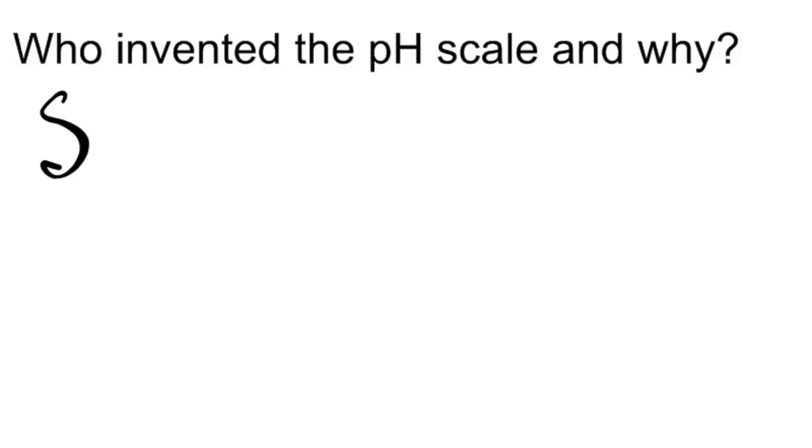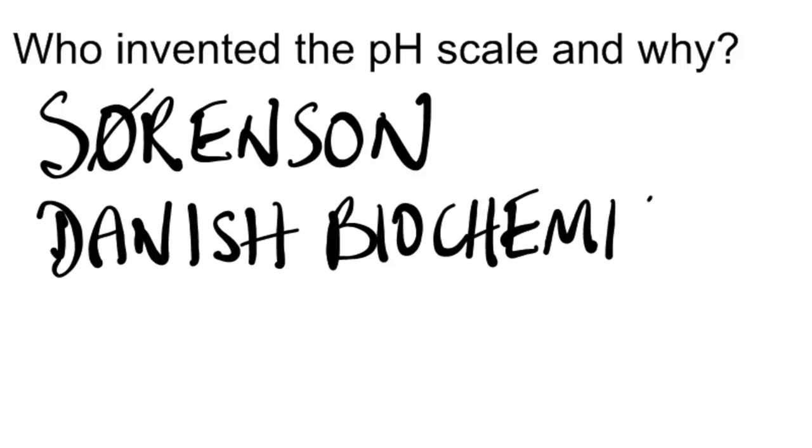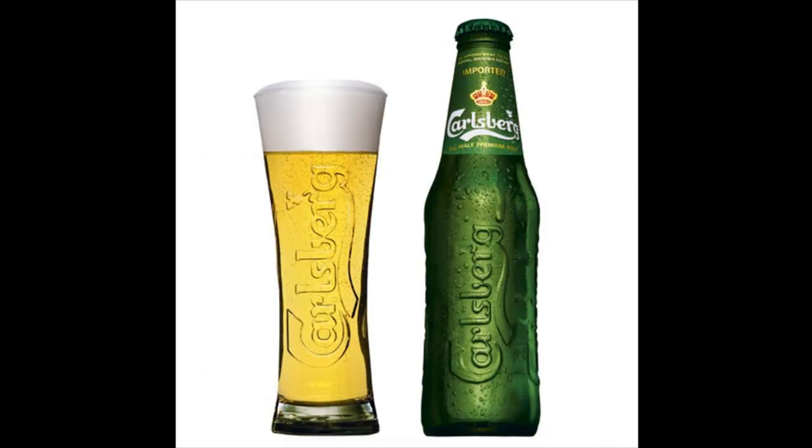So who invented the pH scale and why? His name was Sorensen, a Danish biochemist. He worked for the Carlsberg Beer Company.